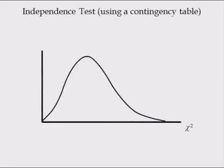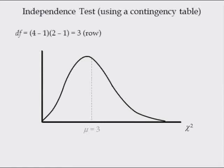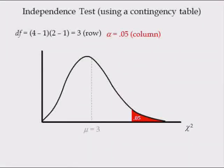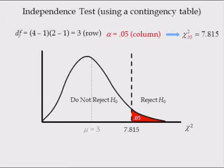The mean of the chi-square distribution is equal to the degrees of freedom, which in this case is the product of the number of rows minus 1 and the number of columns minus 1. Since there are four columns and two rows, the mean is equal to 3. The critical value is found in the chi-square distribution table in the row corresponding to 3 degrees of freedom and column corresponding to a significance level of 0.05. Thus the critical value is 7.815.